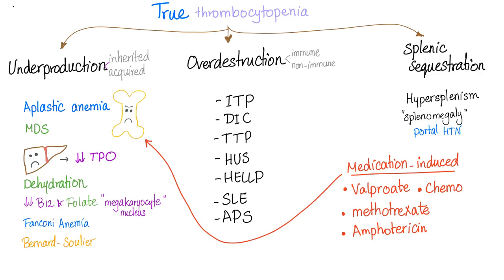Next, we have splenic sequestration — hypersplenism. When the spleen is large or hyperfunctioning, it will hide more platelets; it will engulf more platelets. Also portal hypertension, because portal hypertension leads to splenomegaly. This is all called splenic sequestration.